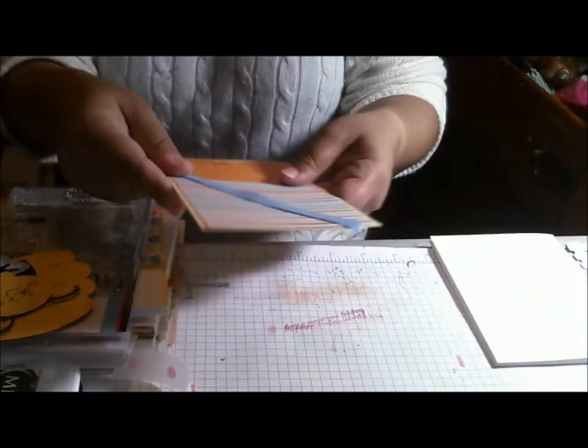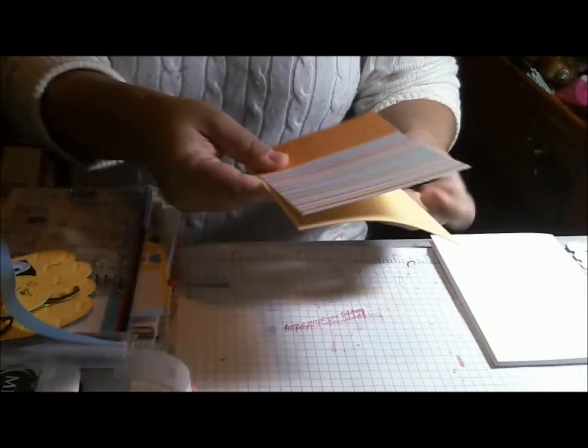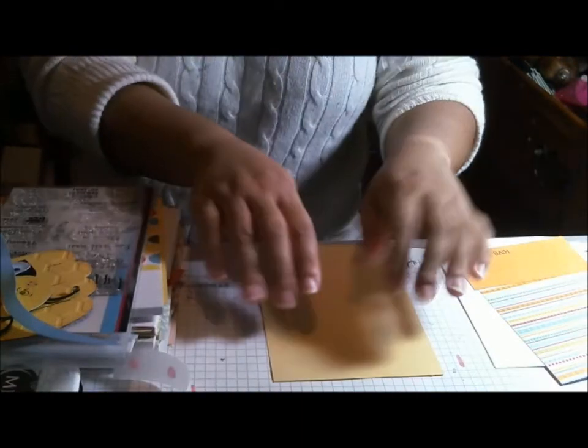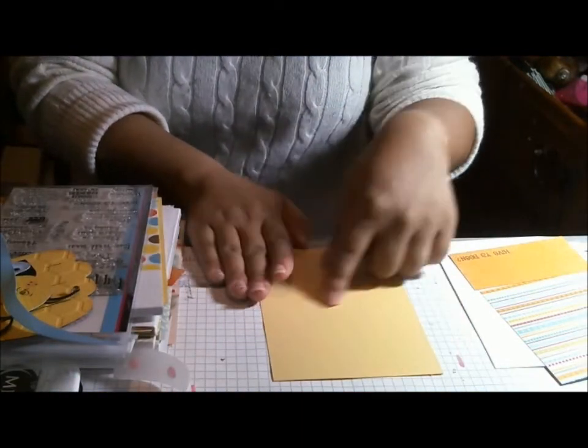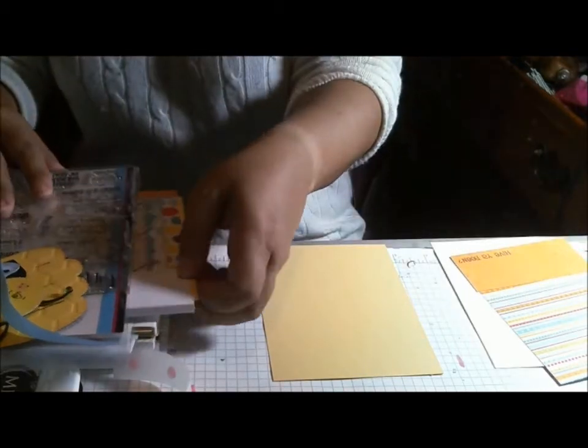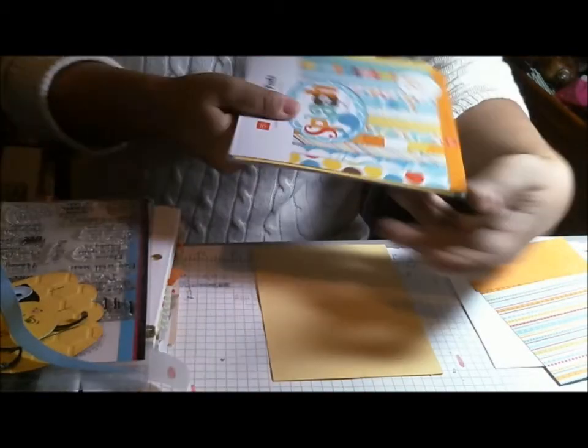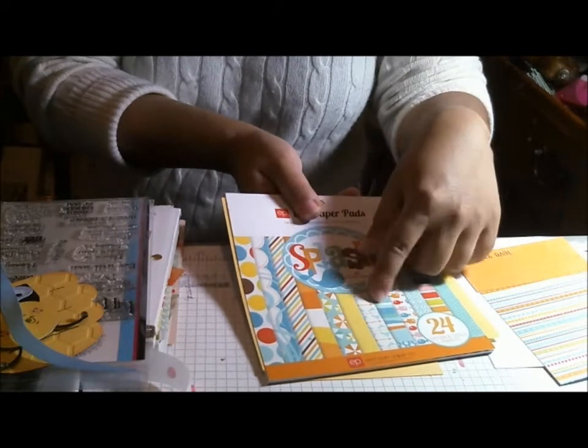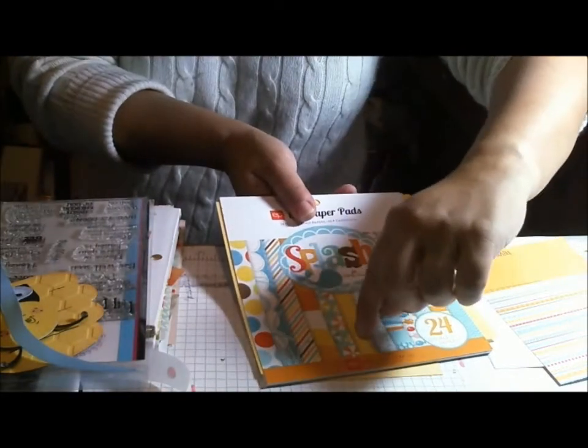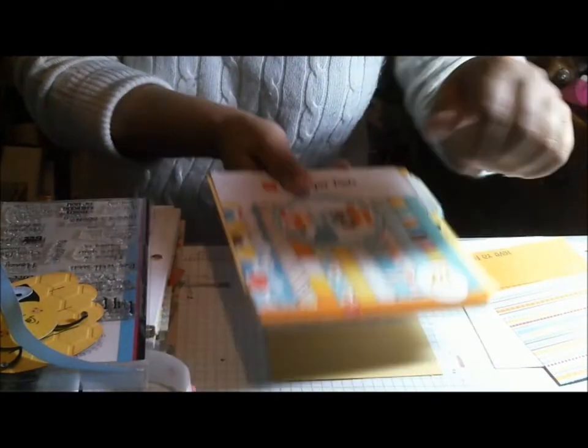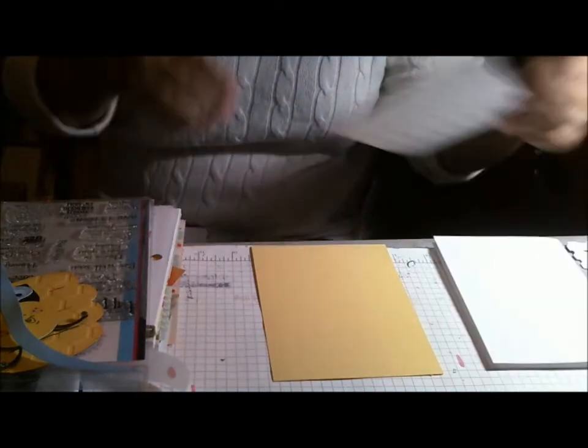So let's go ahead and start with our card. This is a yellow cardstock at five and a half by four and a quarter and I'm using designer paper from Splash. So the bee is actually cut out of this yellow and then I've got these pieces right here.